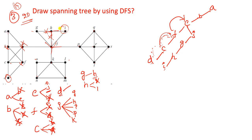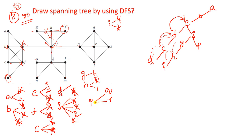At J: G, H, I are completed. Remaining elements are P and K. Take P. Explore P - P has incident vertices Q, R, T, and J. J is already visited. Among Q and T, take Q. Explore Q - Q has P (already visited), R, and S. Among R and S take R. Explore R - R has Q (visited), P (visited), S, and T.